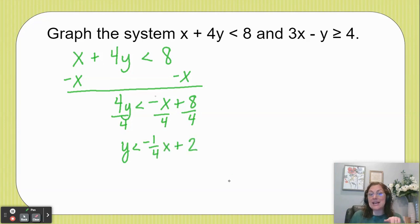Notice how I did that negative x divided by 4 as negative one-fourth x to make it simpler. Now let's do the same thing for the 3x minus y is greater than or equal to 4.